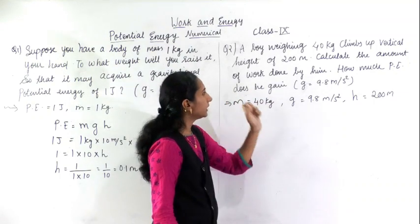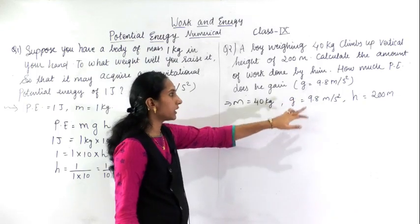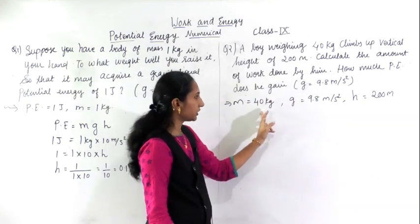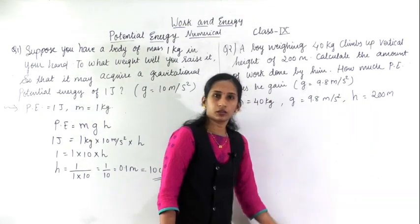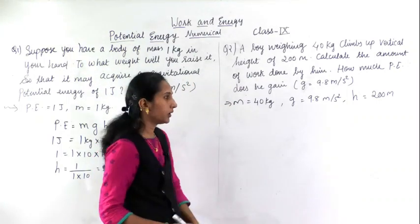How much PE does he gain? What will be the potential energy he gains? G is given 9.8, mass m is 40 kg, and height he has climbed will be 200 meters.